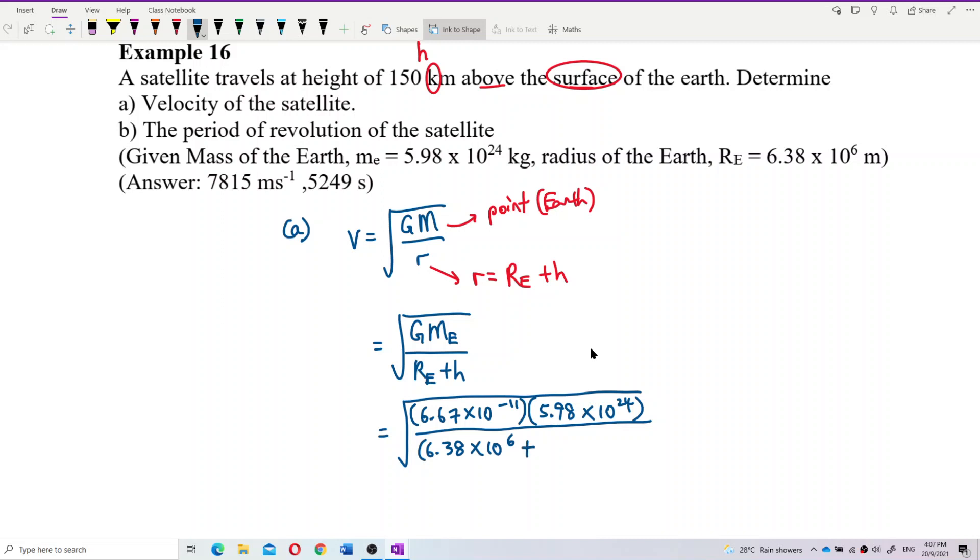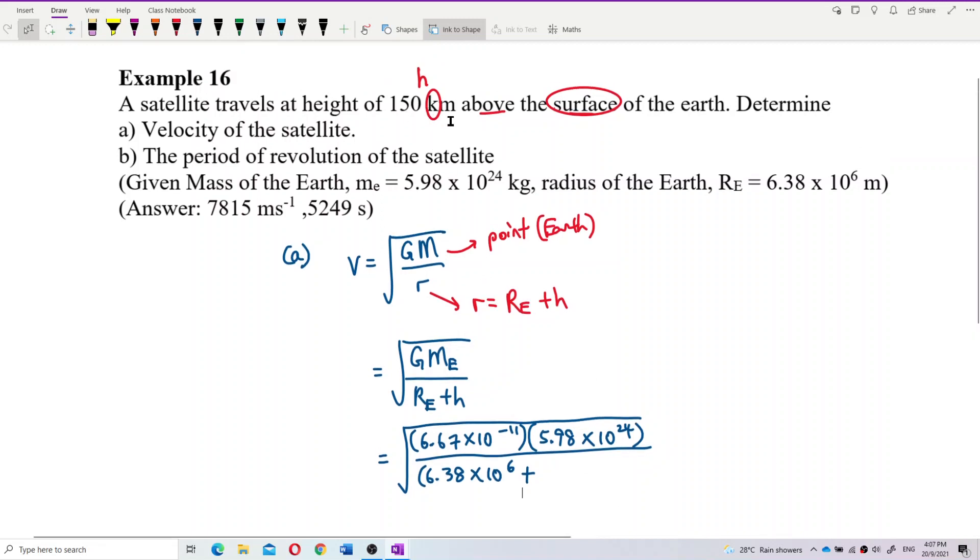Plus the height. The height is 150 exponent 3 meter. That's correct. So let's calculate.